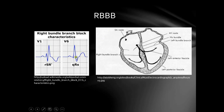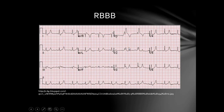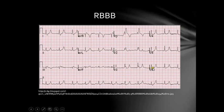Here on this drawing, we have the characteristic right bundle branch block findings: R, S, R-prime pattern — with the right rabbit ear taller than the left — seen in V1. In V6, we have a broad S wave representing right ventricular depolarization. On the characteristic ECG of right bundle branch block, we can see the R, S, R-prime pattern in V1, V2, and V3; a wide QRS complex throughout the ECG; and a broad slurred S wave in V5, V6, as well as in leads 1 and AVL.